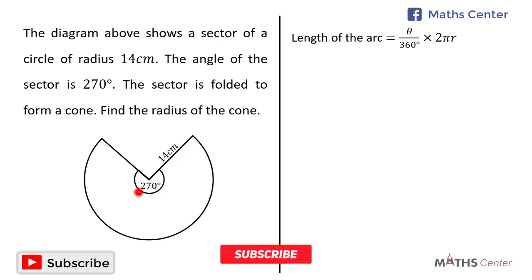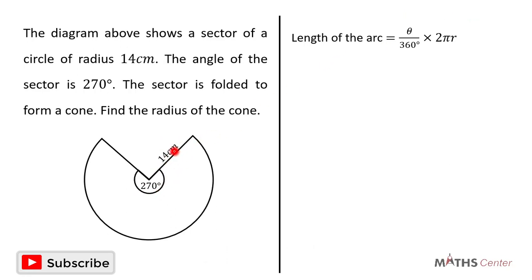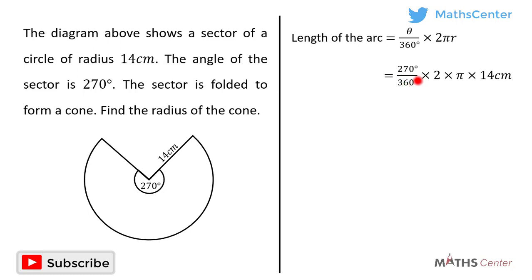Here the angle of the sector is 270 degrees and the radius is 14 centimeters. So the length of the arc of this sector will be equal to 270 degrees divided by 360 degrees, times 2 times pi times the radius which is 14 centimeters. And this will give us 21 pi centimeters. So the length of the arc of this sector is 21 pi centimeters.